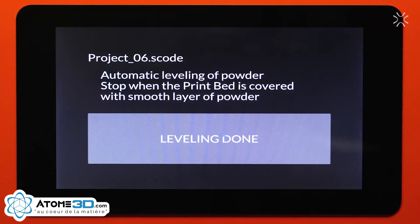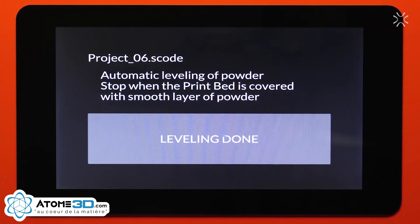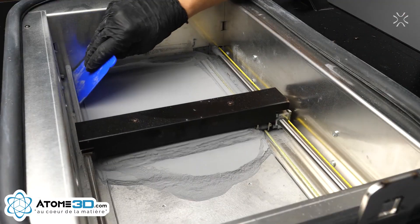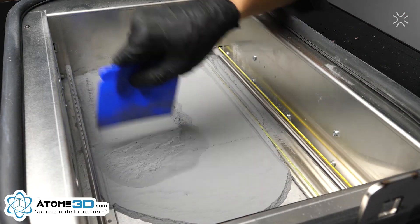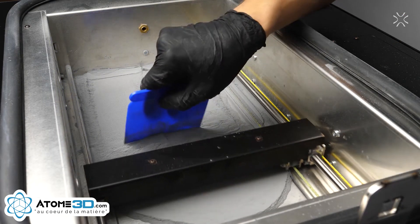Press Start leveling button and the printer will start the process. While leveling takes place, use the scraper to throw the powder remaining on the edges into the chamber.